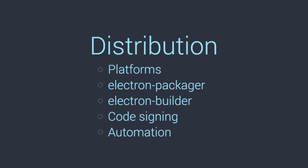If you pick Electron, Electron Packager is a good open source project — it will build your app into a .app or .exe and you can use it programmatically or from the command line. Then Electron Builder goes a step further — it'll build a .app and .exe, create Windows installers, code-sign your app, and more.